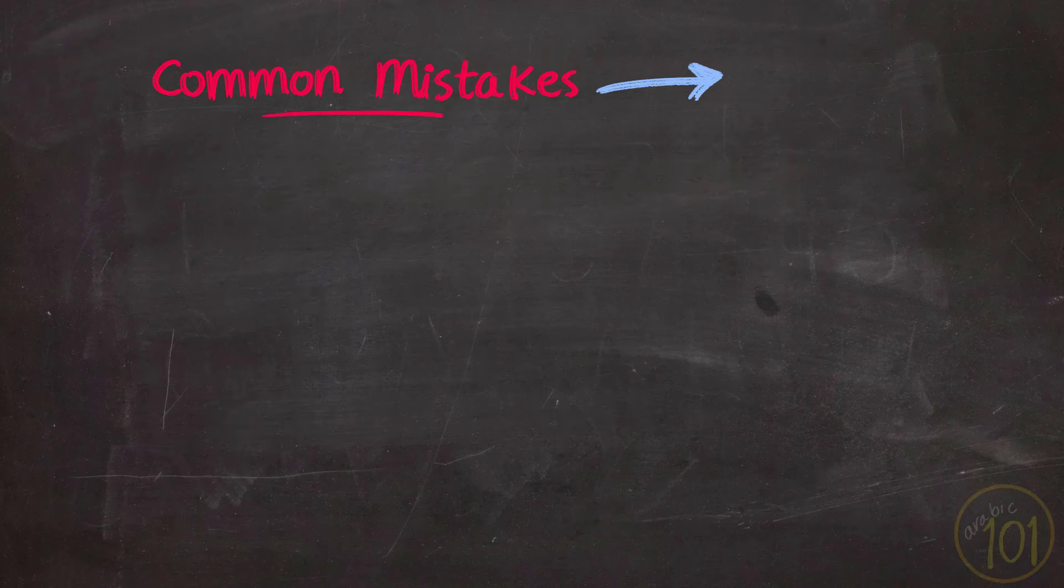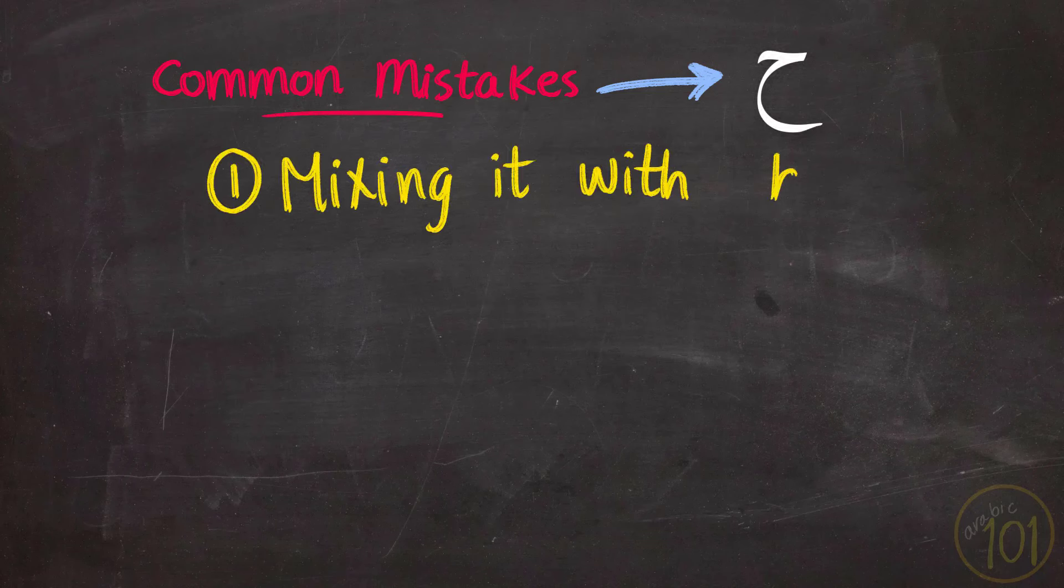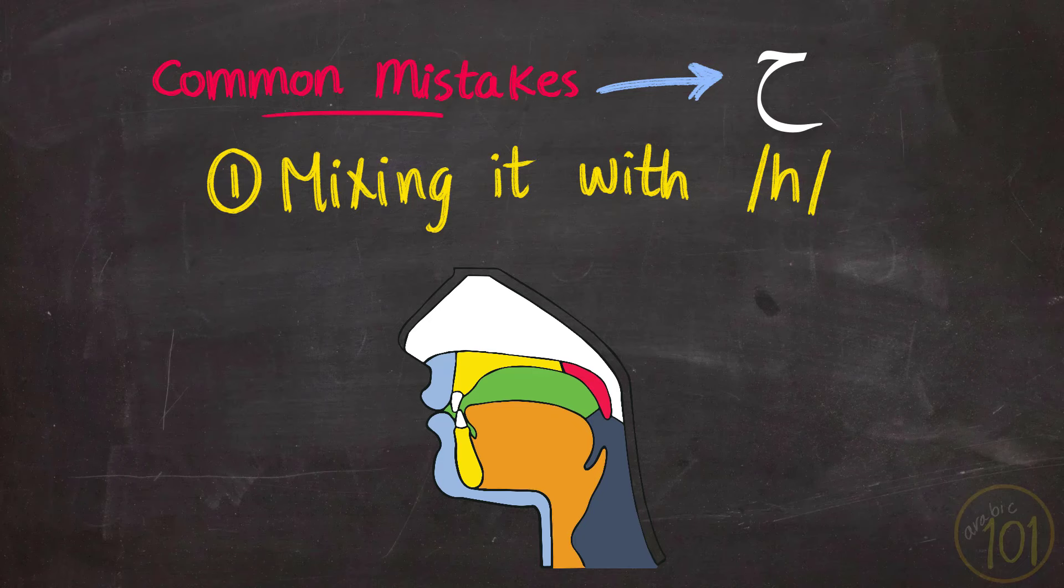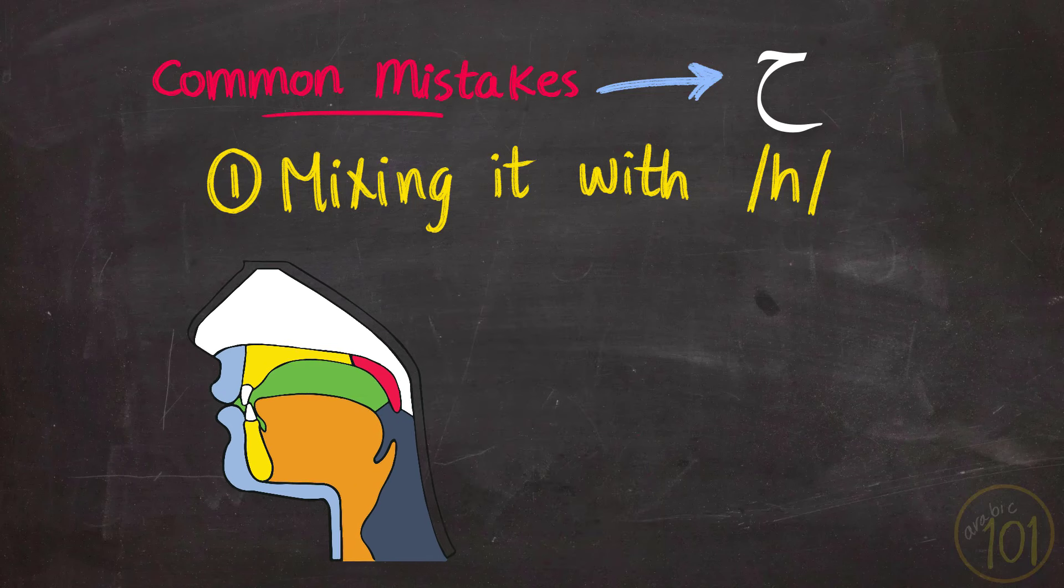Next, the first common mistake of Ha is pronouncing it as Ha. This happens when you don't push your epiglottis at all, which could probably happen if you are trying the Ha sound for the first time, or when you don't have control over your epiglottis yet.